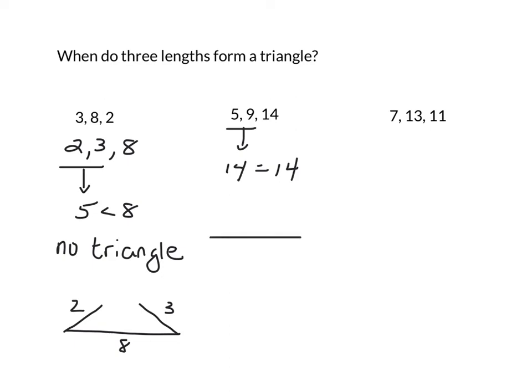If the original length, the longest length, is 14 here, the 5 and the 9 would have to lay flat against this 14. And they don't create any height to form a triangle. So here again, no triangle is possible.